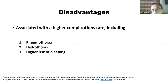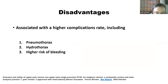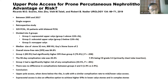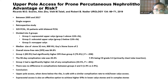The disadvantage of the upper pole is mainly the higher complication rate, including pneumothorax and hydrothorax, and there is a higher risk of bleeding. However, the literature says the risk of bleeding is not different between the upper pole and the lower pole. This was an article published in a urology journal in 2019.